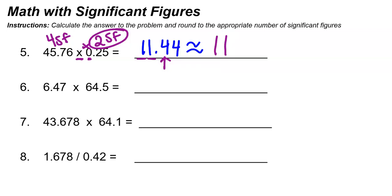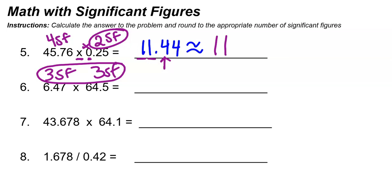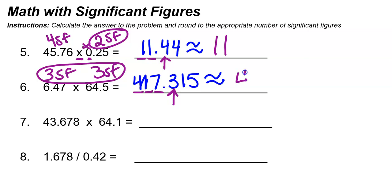Number six: 6.47 times 64.5. Both of these values actually have three significant figures, so the lowest number is three and our final answer should also have three significant figures. Typing into the calculator: 6.47 times 64.5, I get 417.315. I keep the four, the one, and the seven, and look at the three to round — the three makes the seven stay a seven. So our final answer is 417.